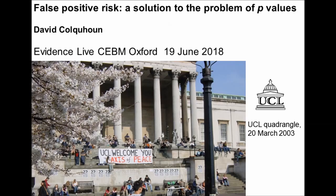I usually start these talks with a slide of UCL's portico, partly because of a beautiful cherry tree in the quad — now dead, sadly — but mainly because the picture was taken on the 20th of March 2003, where UCL was the starting point for the second great anti-Iraq war march. This, above anything, shows the folly of believing things that aren't true, and that, in a sense, is the topic of this talk.